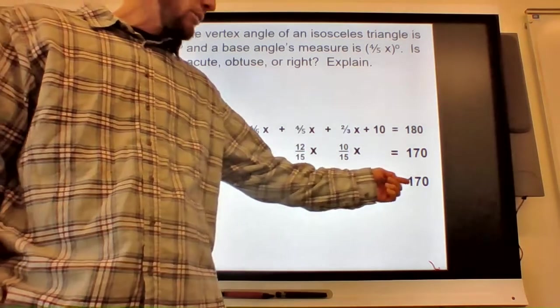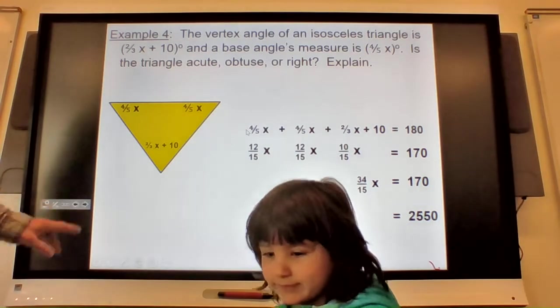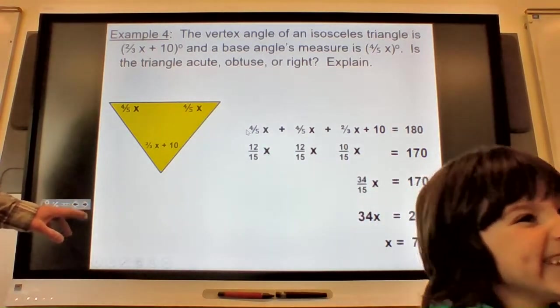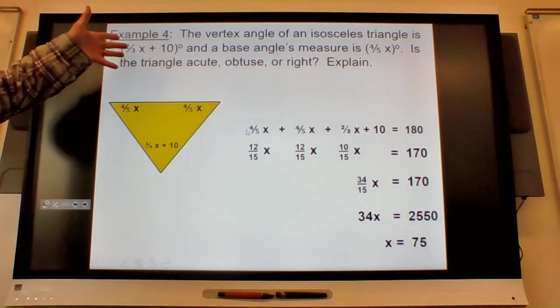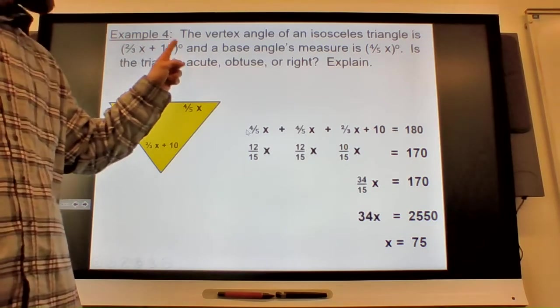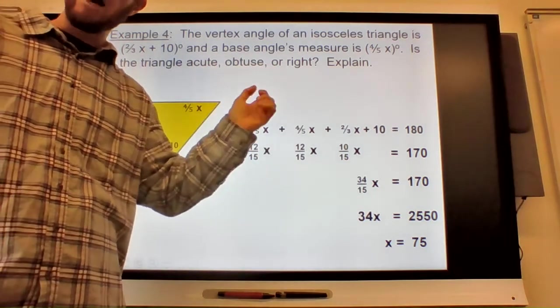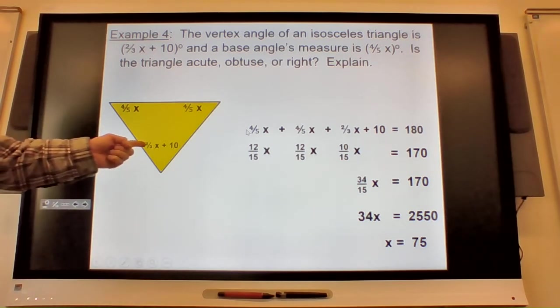You might have noticed that 34 goes into 170 evenly. There's some cross-multiplying. Hopefully, you know, algebraically use your honors skills to solve that. You get 75 for x. This didn't ask you to find x though. Keep that in mind. This asks you to identify whether it's acute, obtuse, or right. So using that vocab from the previous section, I figure out what type of triangle it is.